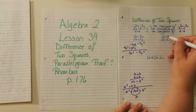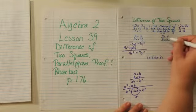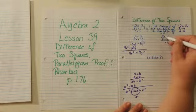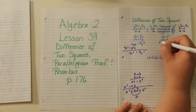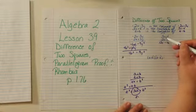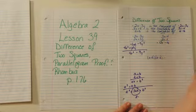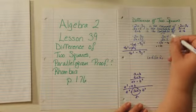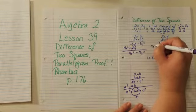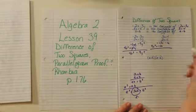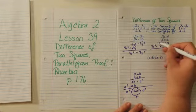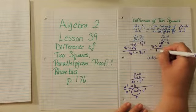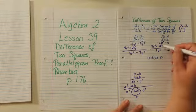Here we have 3x plus 4 and 3x minus 4. Negative 4 times positive 4 is negative 16. Negative 4 times 3x is negative 12x. 3x times positive 4 is positive 12x. 3x times 3x is 9x squared. So we have negative 16, the negative 12x and positive 12x cancel, and we have 9x squared with no middle term. The middle terms cancel.